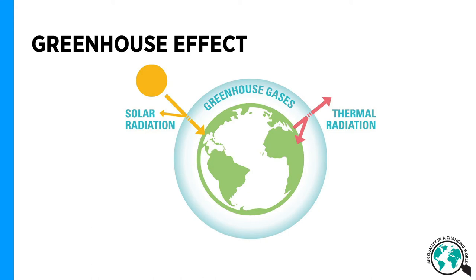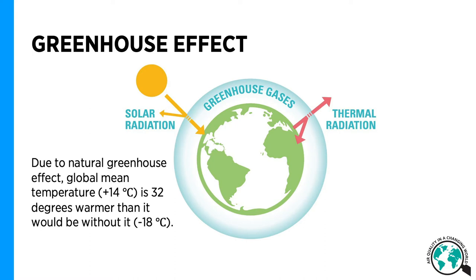The Earth also emits electromagnetic radiation, but with a different, longer wavelength — so-called thermal radiation. The atmosphere interacts differently with this short wavelength solar radiation and the long wavelength thermal radiation. We have the so-called greenhouse gases in the atmosphere that efficiently absorb this long wavelength thermal radiation, prevent it from escaping to space, and radiate it back to the surface of the Earth, warming the surface. This is the so-called greenhouse effect.